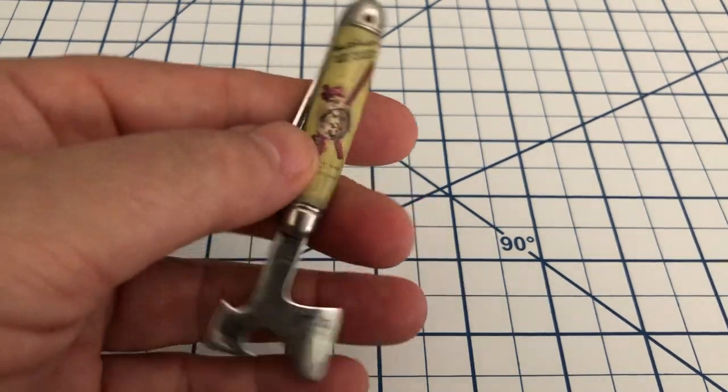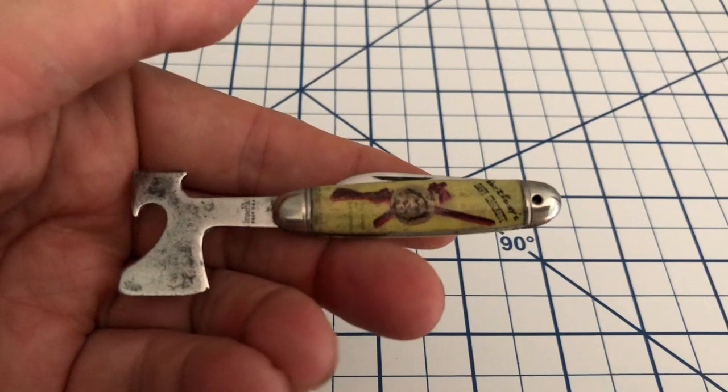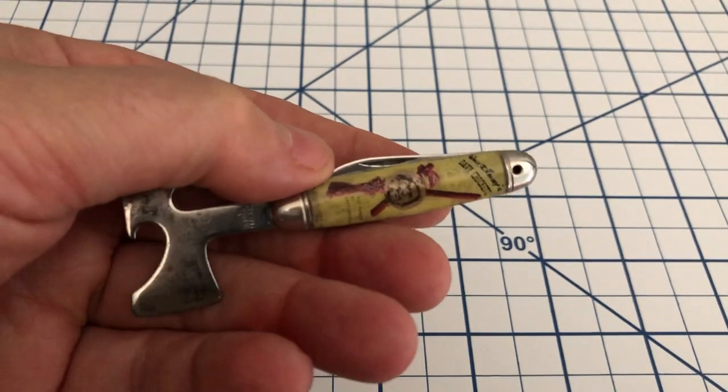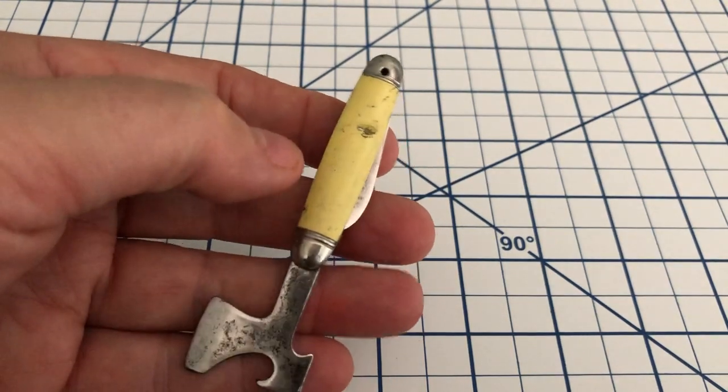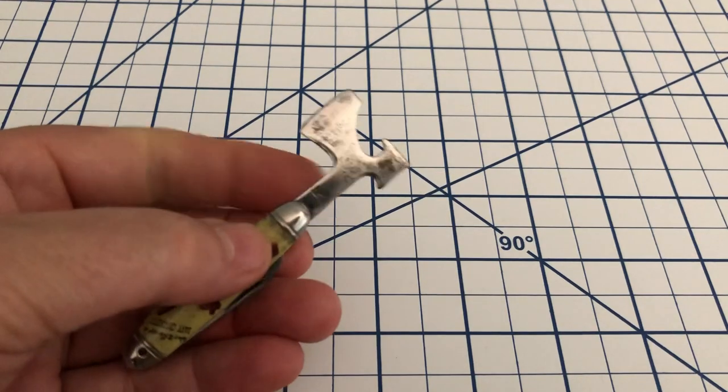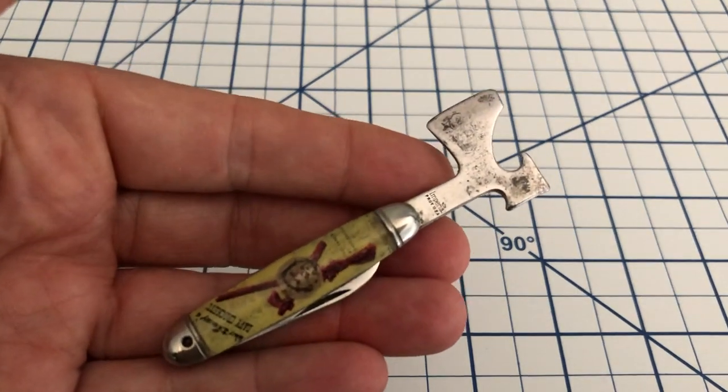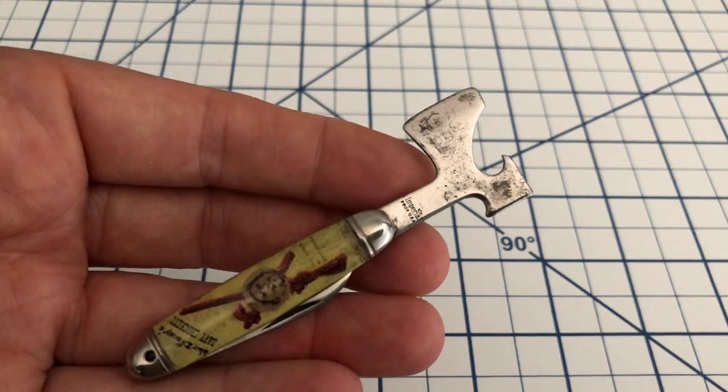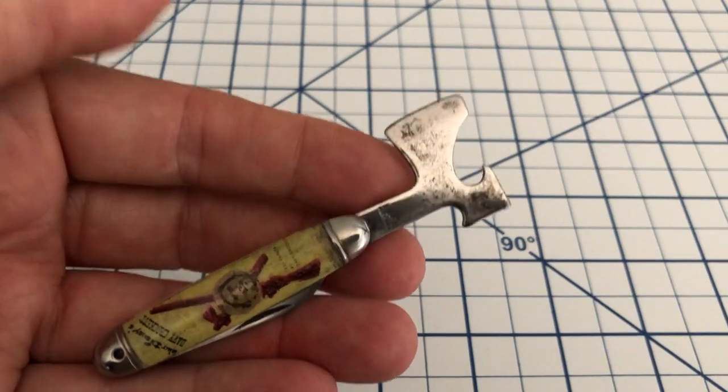The original price on this was $4.50, and honestly, I don't think I paid that much more than that for this. I think I may have paid $7.50. You can find these out there in a little better shape. You probably will pay, you know, $10 to maybe $15 if you get one in really good shape.